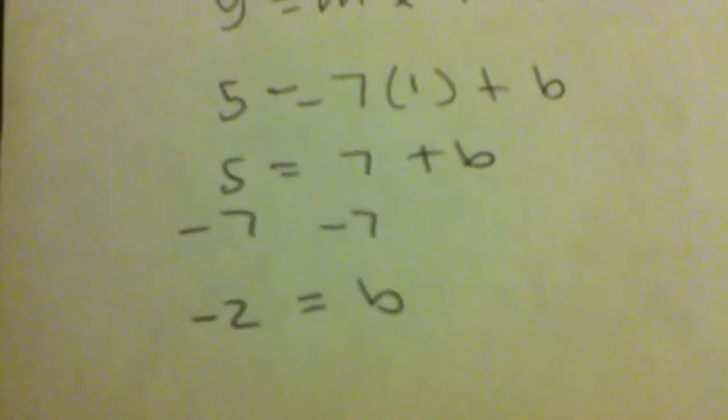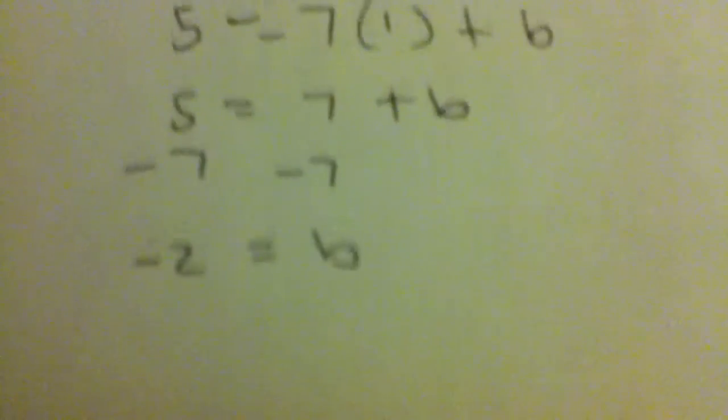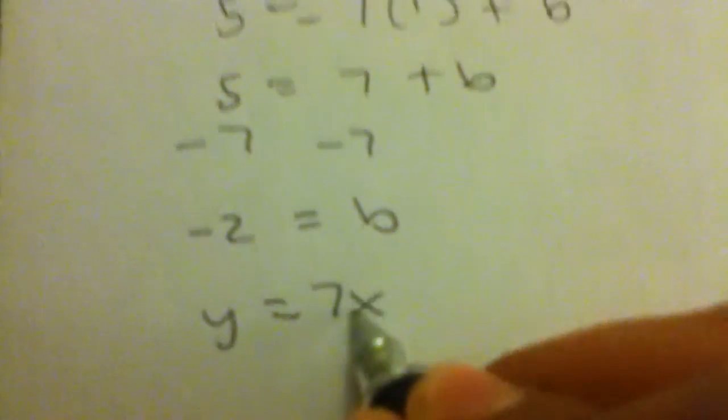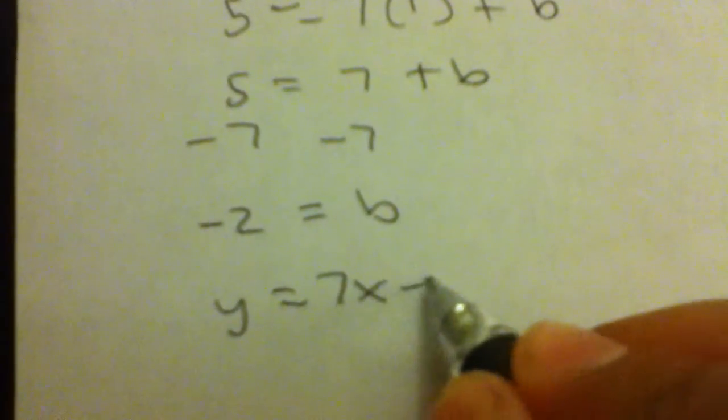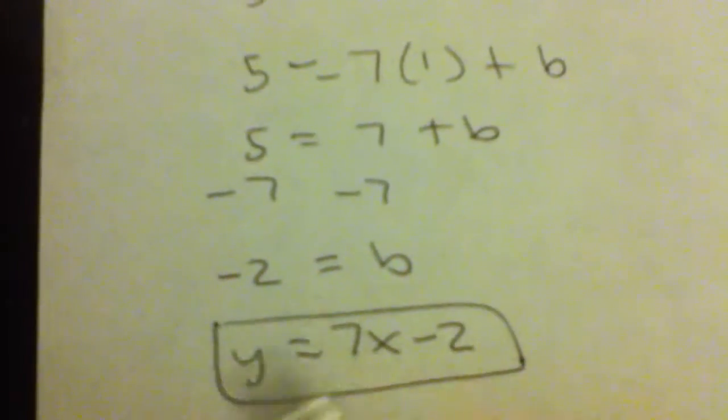Now we can write our equation, which is y equals the slope, which is 7, and the y-intercept, which is negative 2. So y = 7x - 2. Now that's part A.